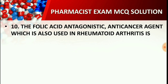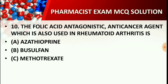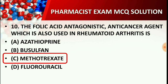Question number ten: The folic acid antagonistic anti-cancer agent which is also used in rheumatoid arthritis is — Option A: Azathioprine, Option B: Busulfan, Option C: Methotrexate, Option D: Fluorouracil. The right answer is Option C: Methotrexate.